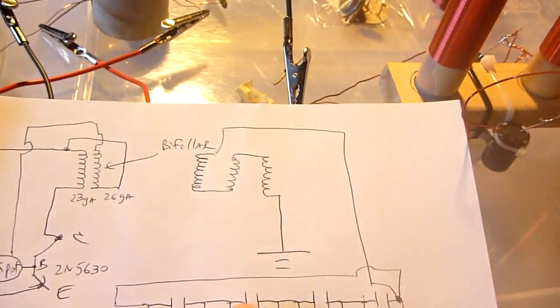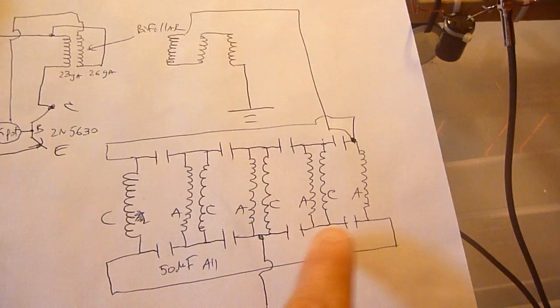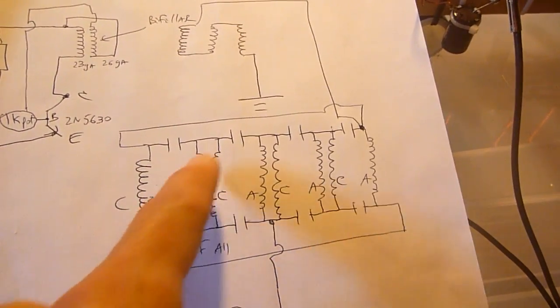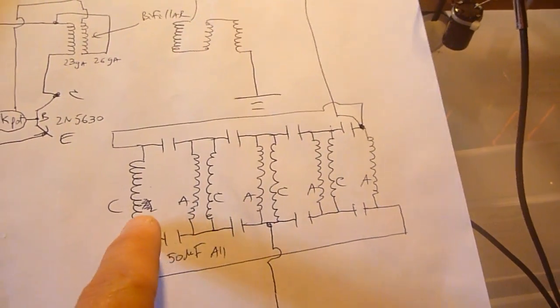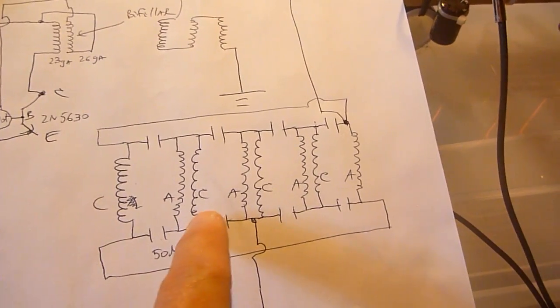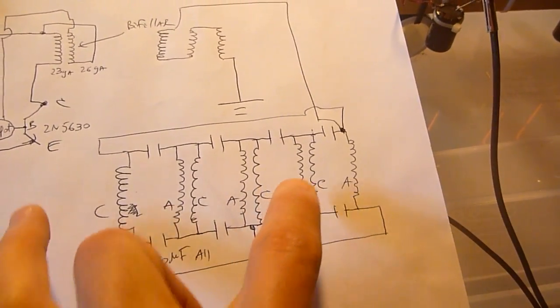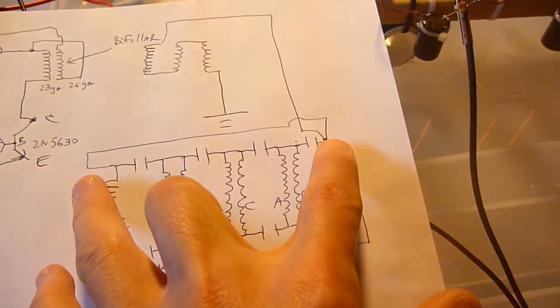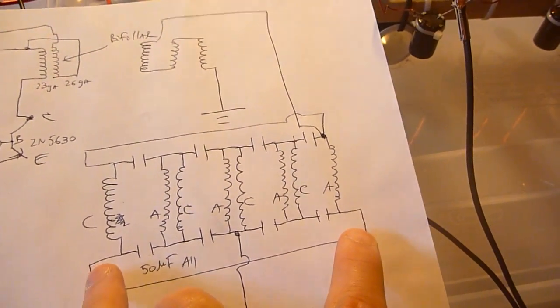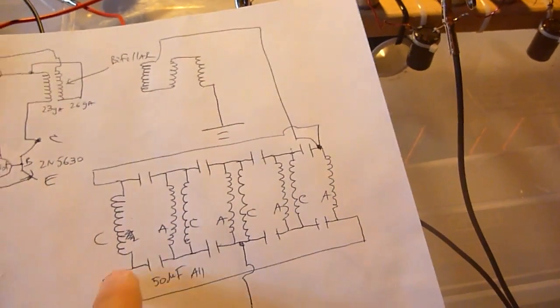And the other end goes to an arrangement of coils. So these coils are all in shunt. C designates clockwise wound, A designates anti-clockwise wound. And they're connected right there to each other and right there. So they're basically shorted out with themselves.